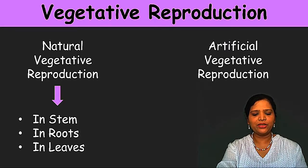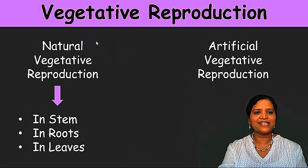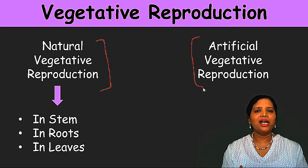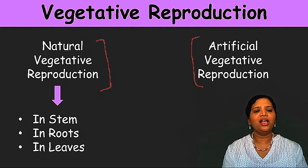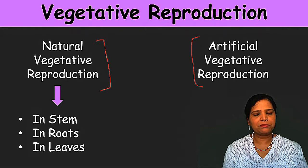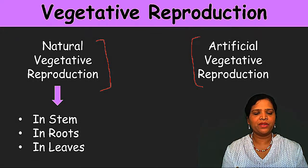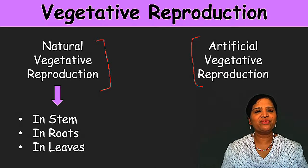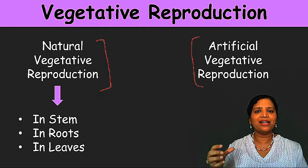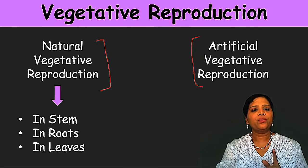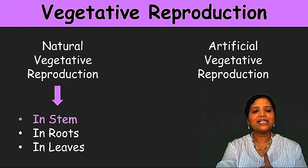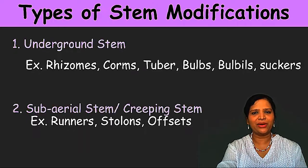Vegetative method of reproduction can be classified into two broad categories: natural vegetative reproduction and artificial vegetative reproduction. Natural means it occurs naturally with no man-made intervention. Examples include modifications in the stem part, root part, or in some plants the leaf part. Artificial vegetative reproduction is where man is involved — we will study that in another class. In this lecture we are particularly going to concentrate on stem modification in the natural vegetative reproduction method.